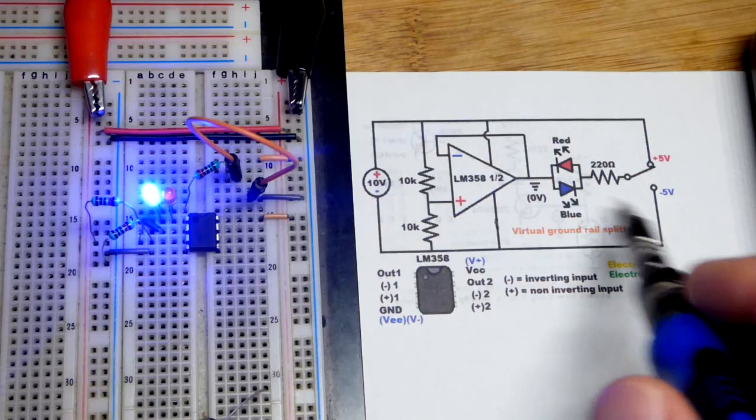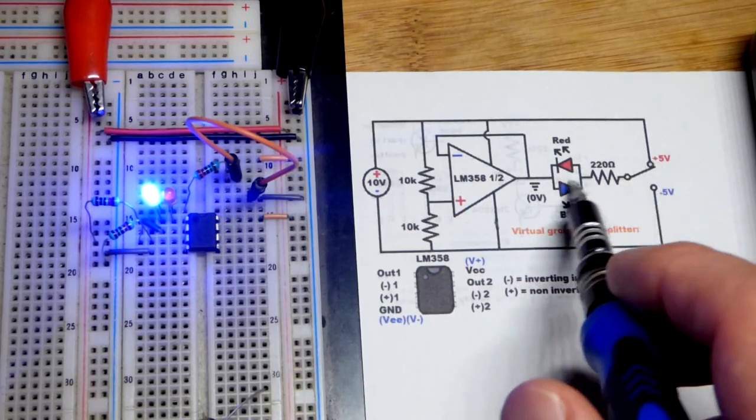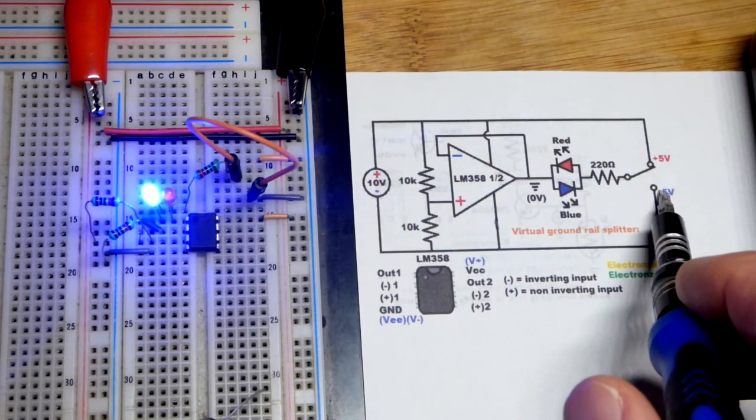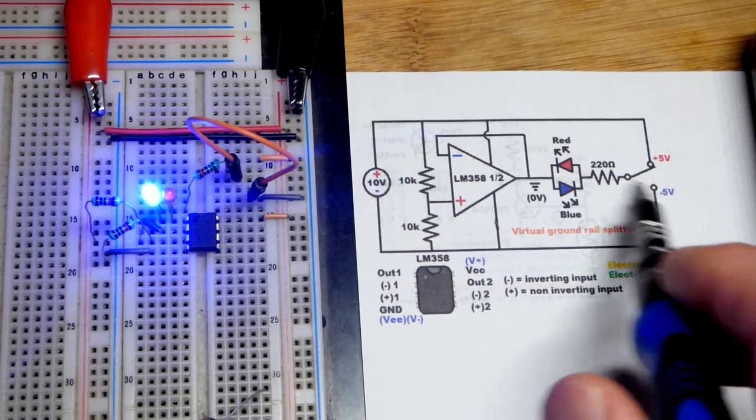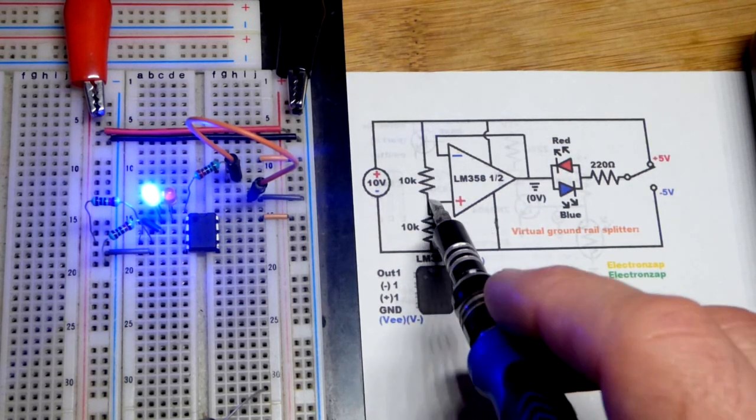So instead of 10 volts, 10 up there and 0 volts here, we have 0 volts there, plus 5 volts over there, and then minus 5 volts over here in relationship to our makeshift ground, which is half of the supply voltage.